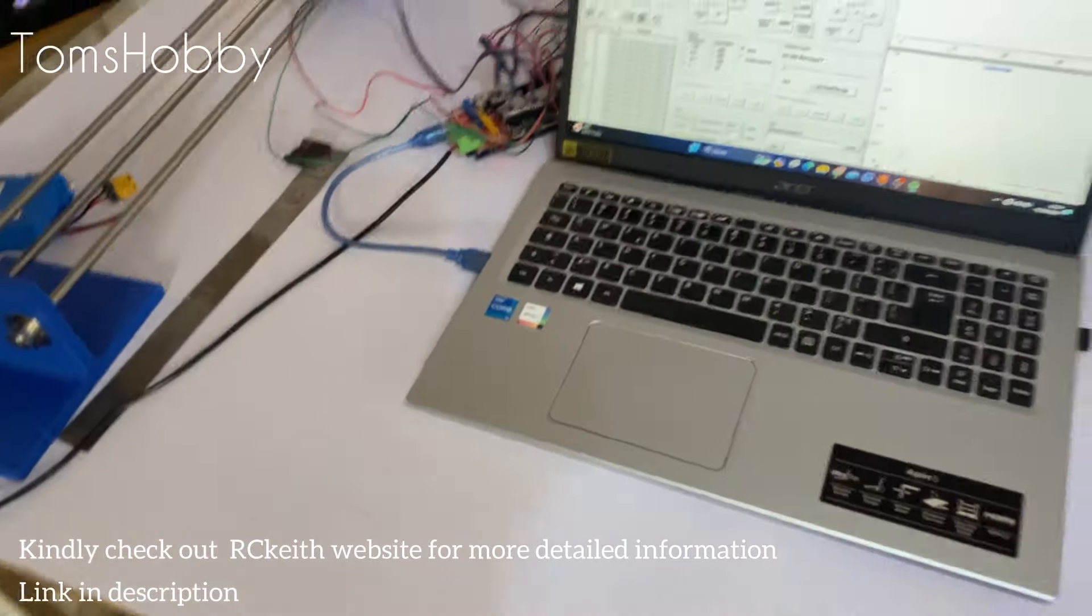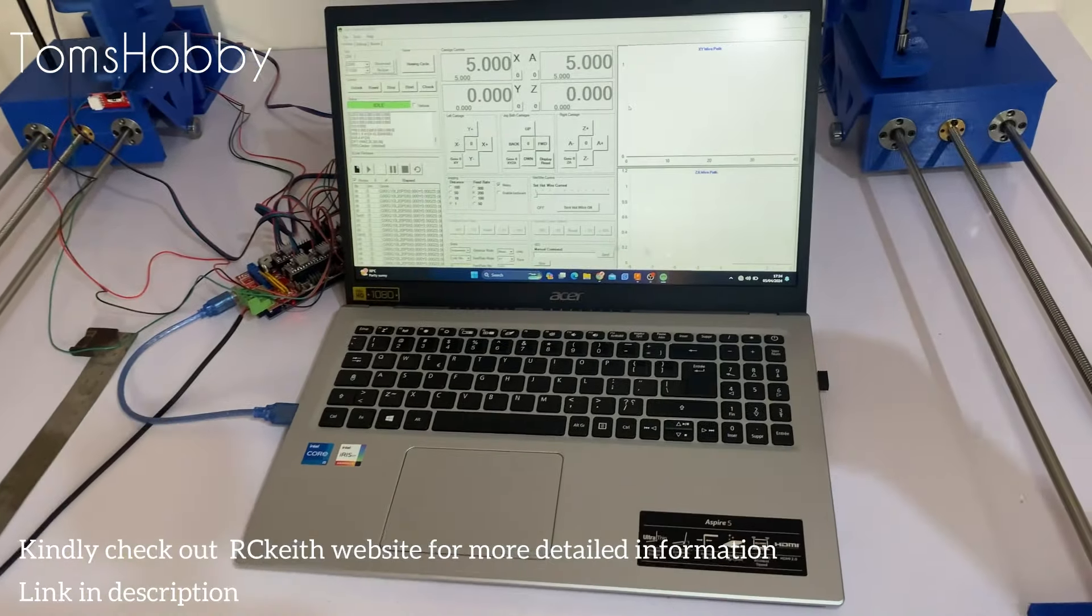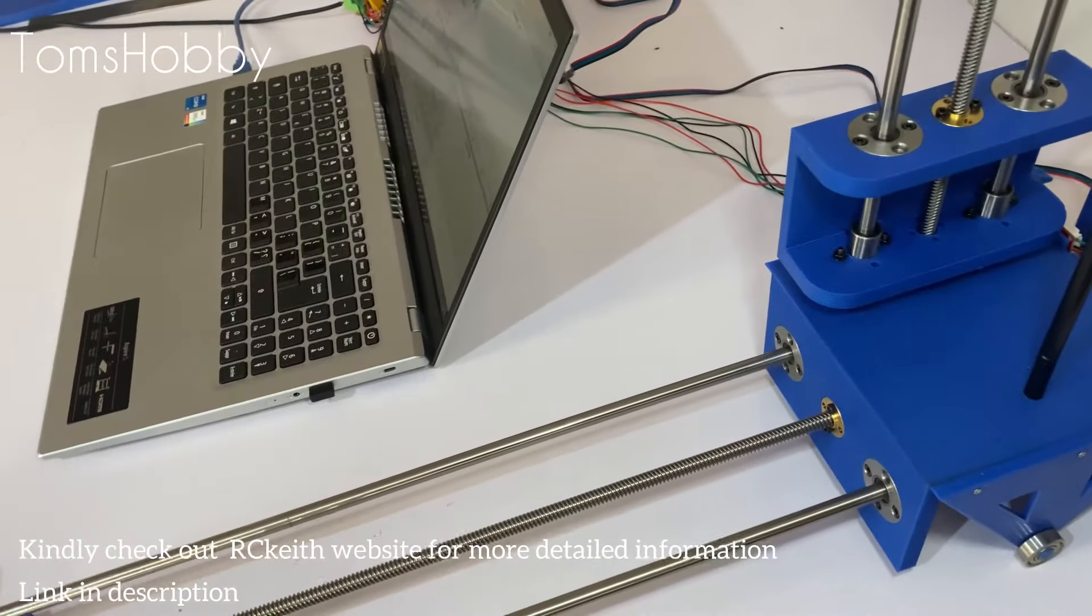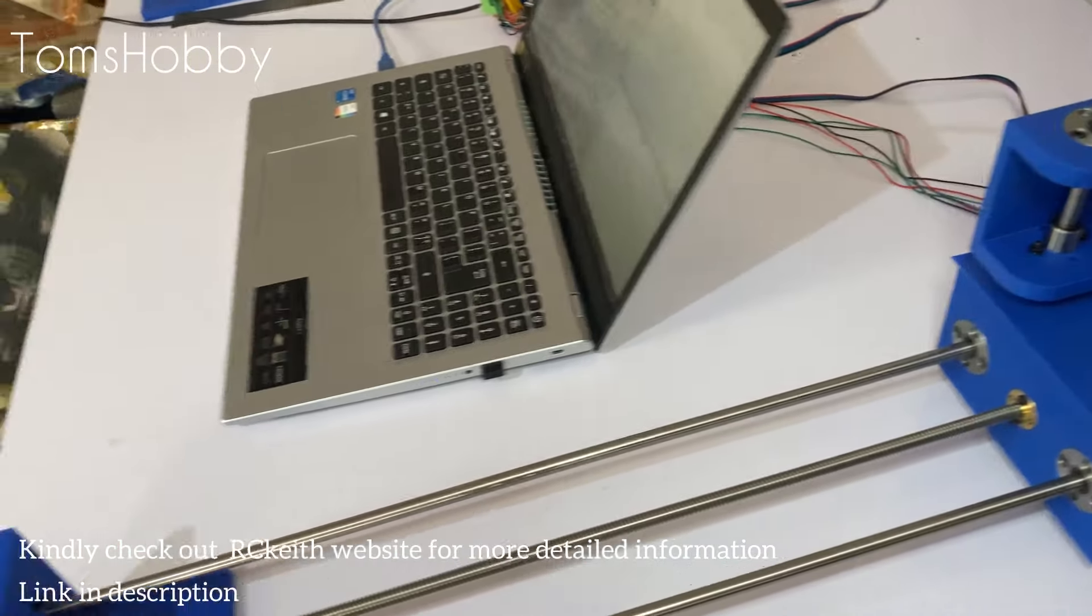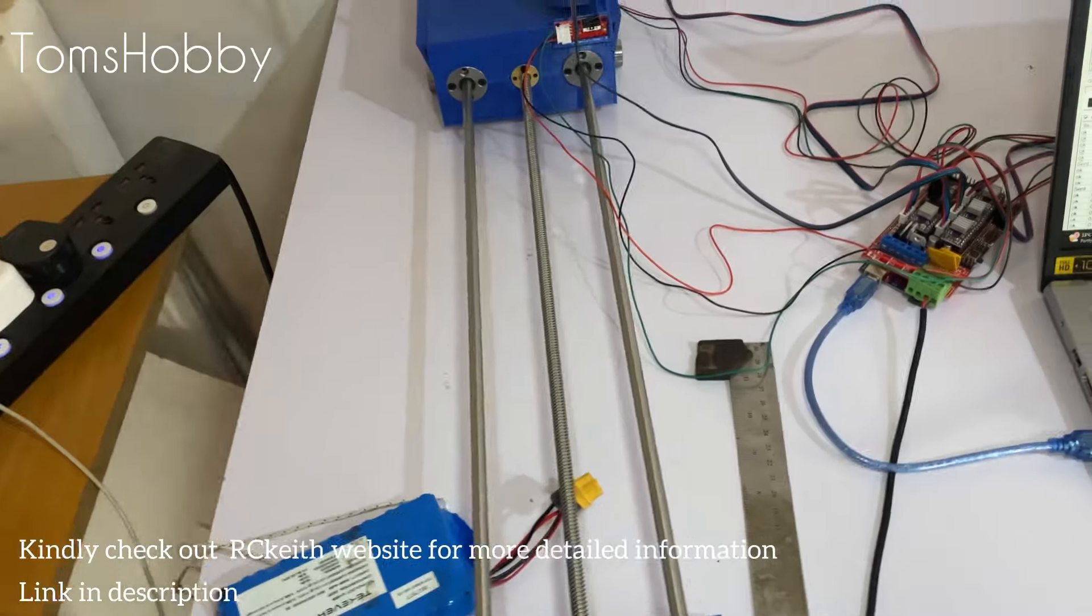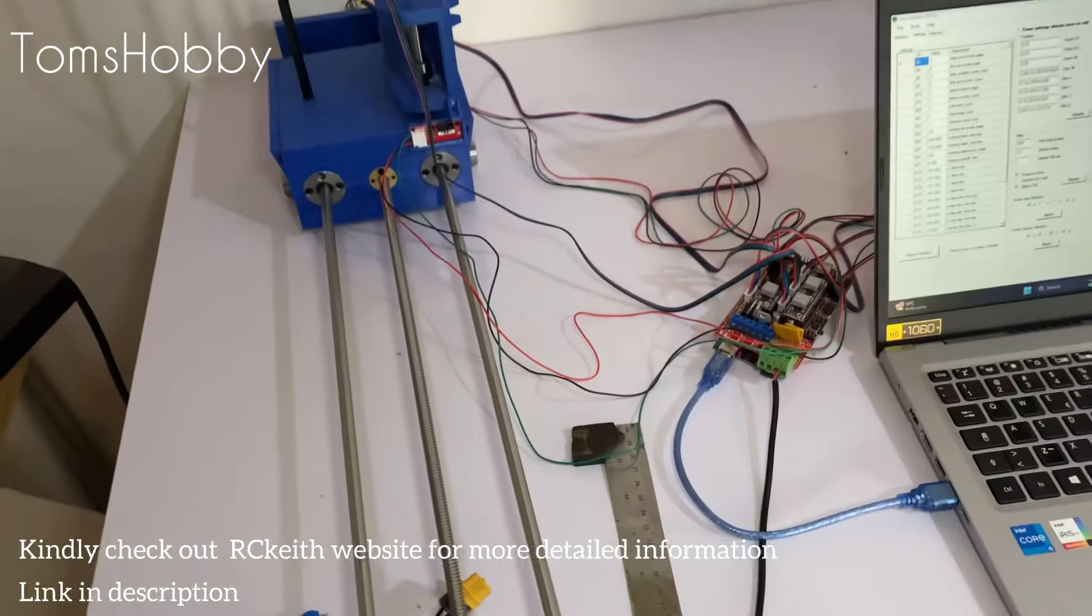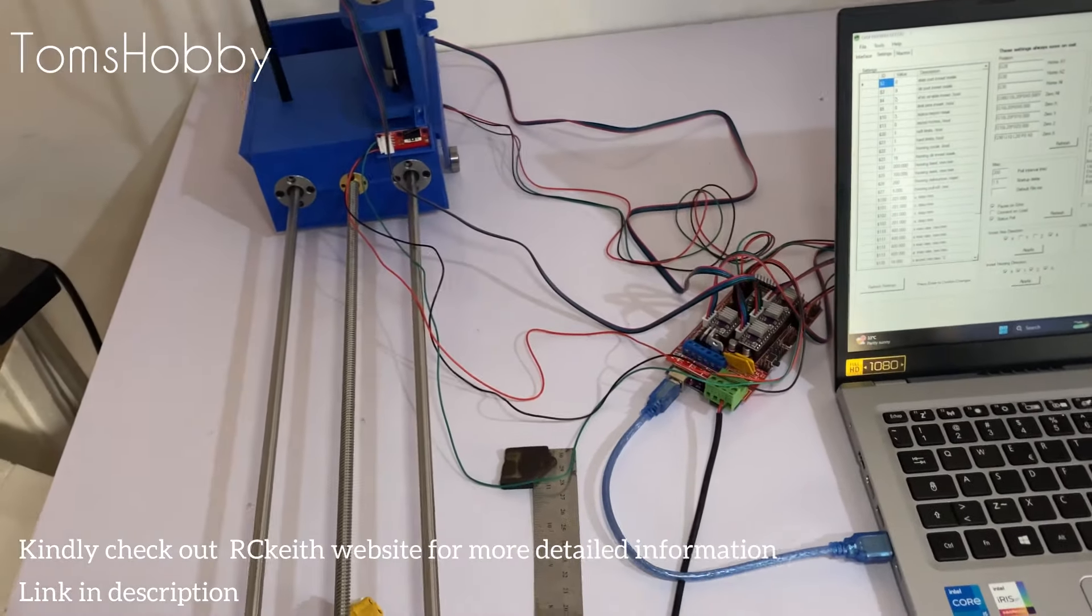I was having an issue with the limit switch. When you start homing position and it initiates the limit switch, it doesn't go back up, it just continues to go down. I've tried to reverse the direction. So it turns out that from the settings, rather than changing dollar five to one, I should have left it at zero and then the rest seems to work fine.